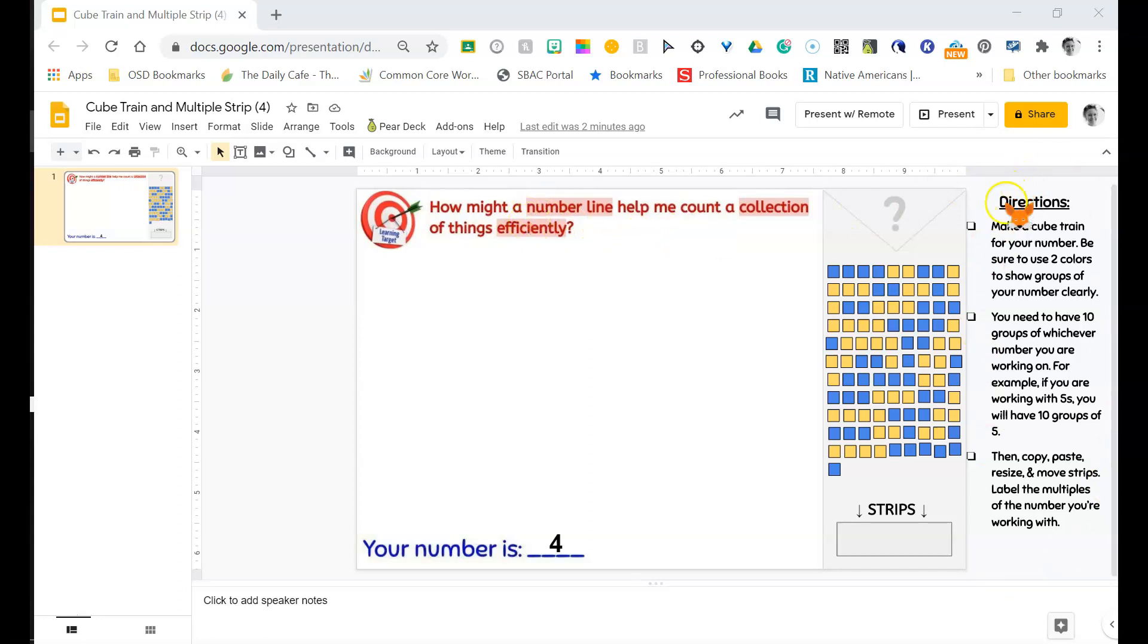Let's take a look at the directions. First, we're going to make a cube train for our number. A cube train is when we put several trains together into an equal group next to each other, kind of like the cars of a train.